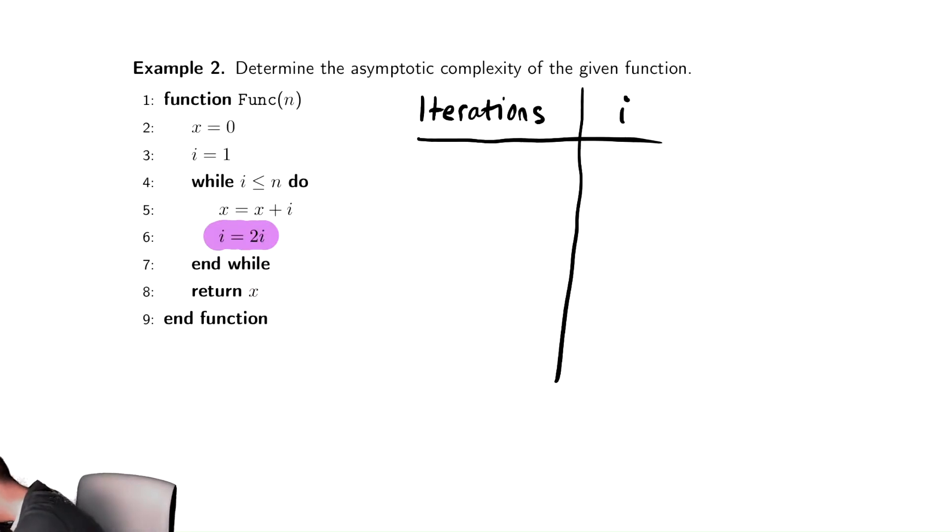I need to say what is the initial value of i. Well, i starts at 1, and it's updated by multiplying by 2. So after 1 iteration finishes, we'll multiply that value by 2. After 2 iterations finish, I'll multiply the previous value by 2, so that's 4.